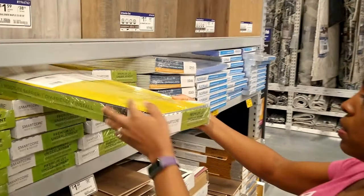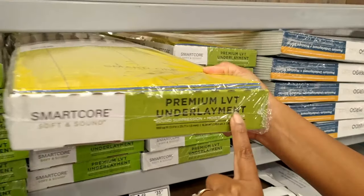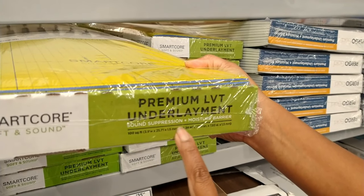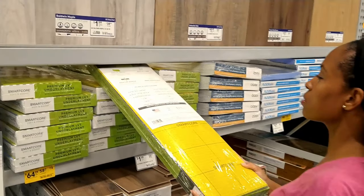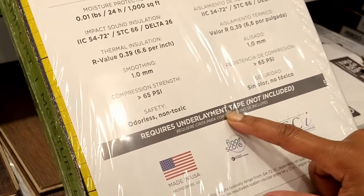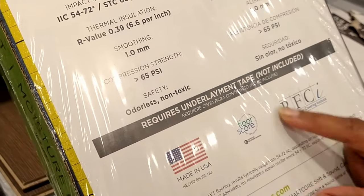Because we have a concrete subfloor, we chose SmartCore premium LVT underlayment. This product was recommended for our vinyl flooring. We realized we had to pick up some underlayment tape as well.